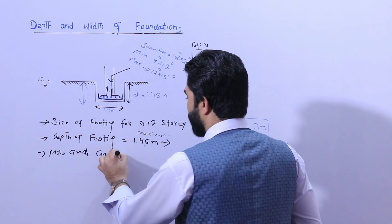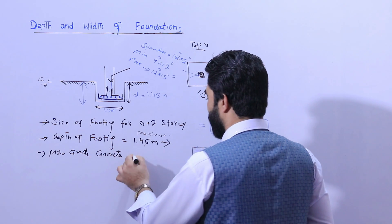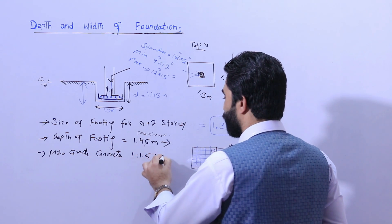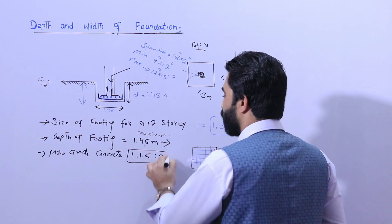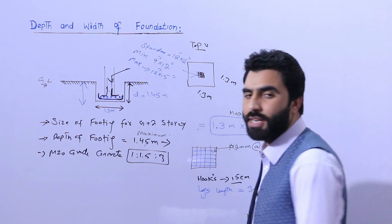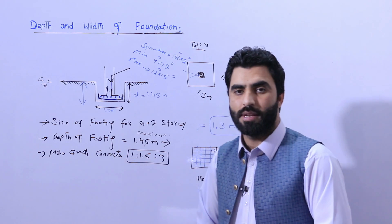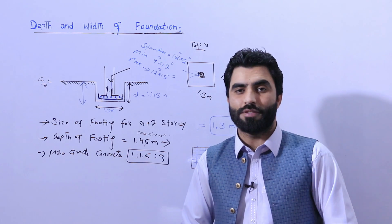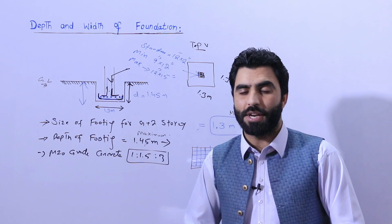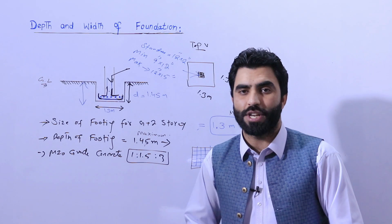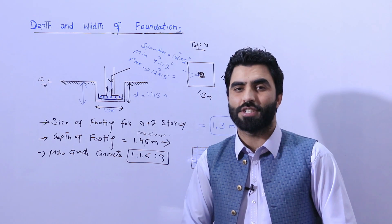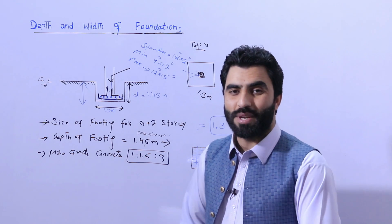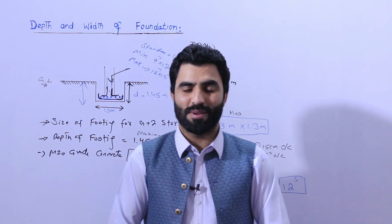M20 grade concrete has a mix ratio of 1:1.5:3 — one part cement, 1.5 parts sand, and 3 parts aggregate. This is a short video about depth, width, and inside steel reinforcement of a foundation. Thanks for watching — see you in the next video, goodbye.